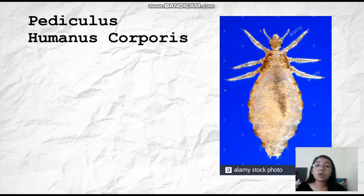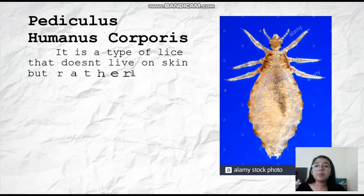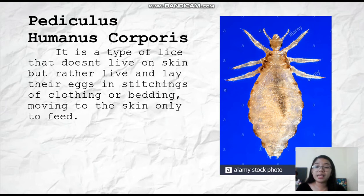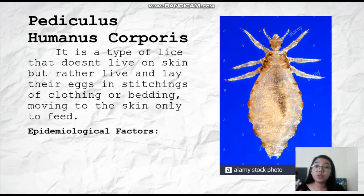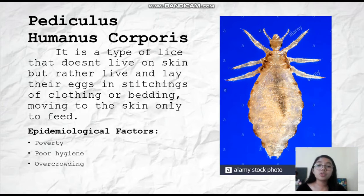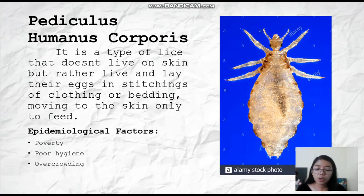Let's proceed to Pediculus humanus corporis, or the body lice. It is a type of lice that doesn't live on the skin, but rather lives and lays eggs in the stitching of clothing or bedding, moving to the skin only to feed. They crawl back to the human skin just to eat and then return to their place in the clothing. The epidemiological factors are poverty, poor hygiene, and overcrowding. A significant difference from head lice is that body lice can transmit bacterial diseases such as trench fever, relapsing fever, and epidemic typhus to humans.